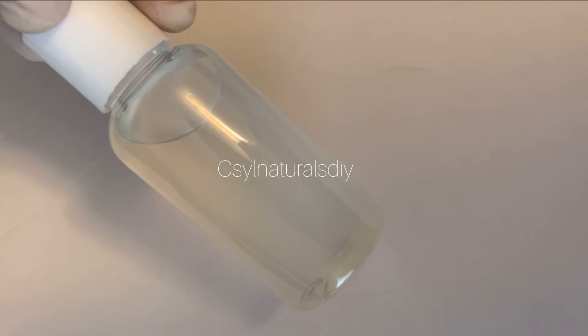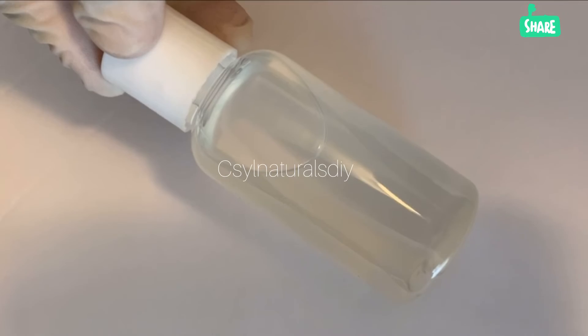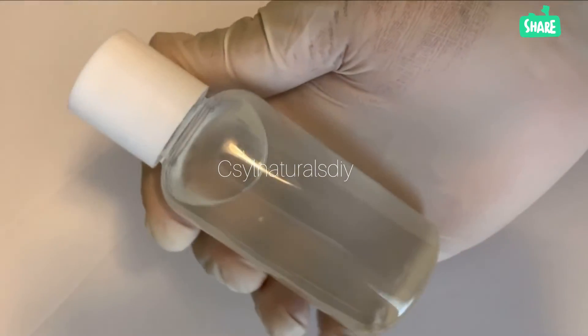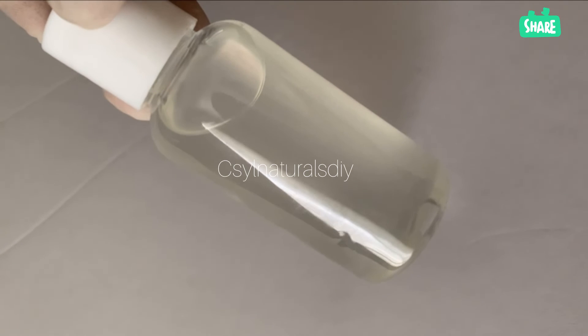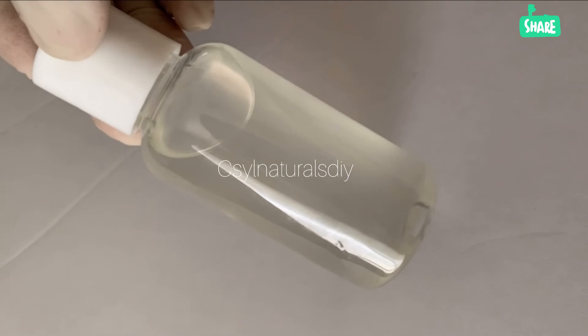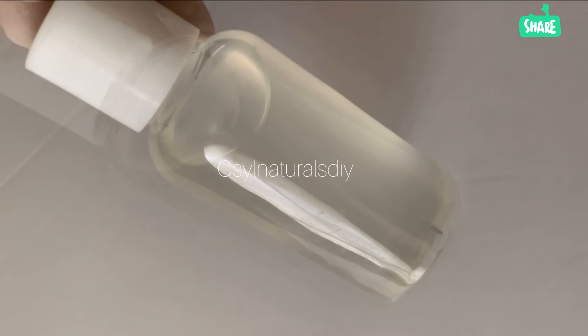This citric acid solution, you only need maybe a drop or two to adjust the pH of your product, your formulation. In the case of adding more, maybe mistakenly you add more than required, you can also look for a solution maybe baking soda or any other solution to bring back the pH where it's supposed to be.